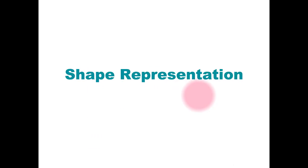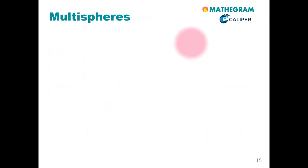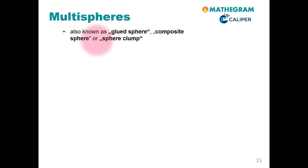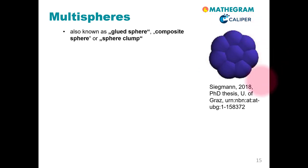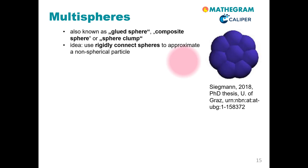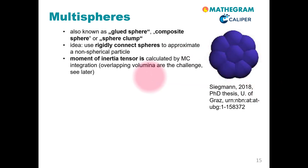Let us now continue to shape representation. We have already outlined three dominating approaches. The first is the so-called multi-sphere approach, also known as the glued sphere, composite sphere, or sphere clump approach. We simply rigidly connect multiple spheres to form a larger non-spherical particle. The challenge is that the properties of this composite particle must be evaluated with care — for example, the moment of inertia tensor or the center of mass must not be calculated simply by summing over the spheres due to overlap. Monte Carlo integration can be used to evaluate such properties.